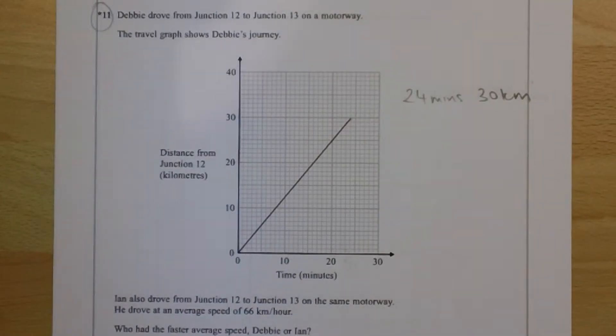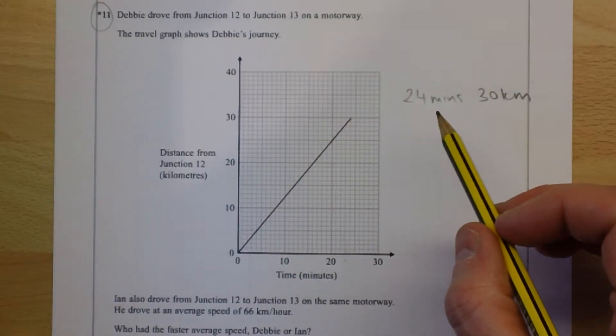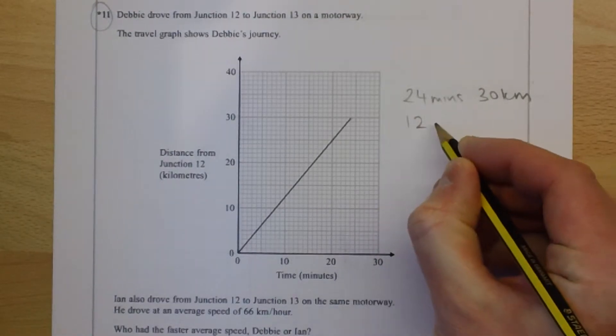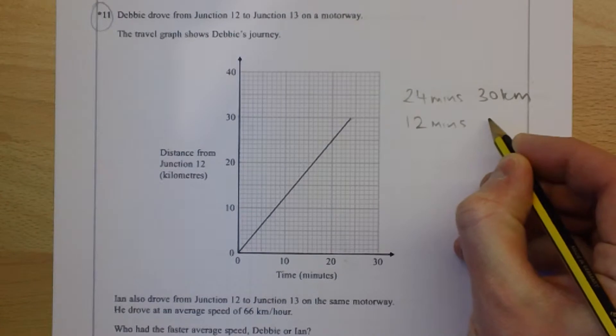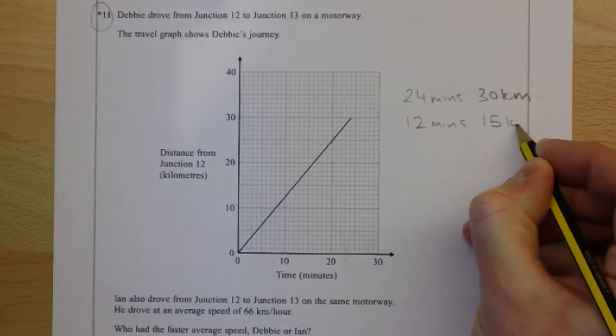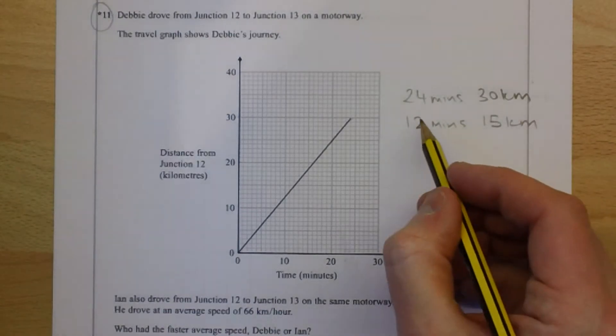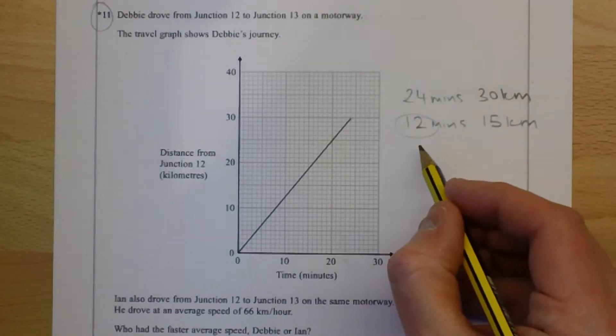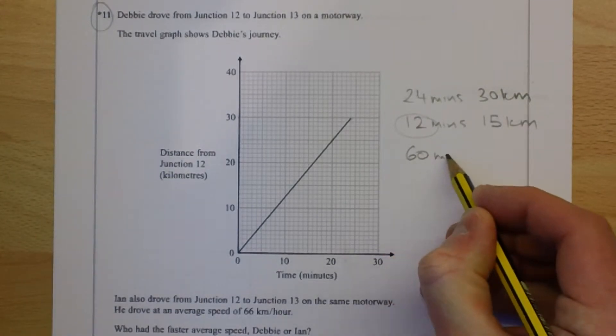It's not immediately obvious how we get to one hour from that time. But if you half the time, then she must have gone half of the distance. And that's useful because 12 goes into 60 exactly five times. So if we multiply that by five, we get 60 minutes.